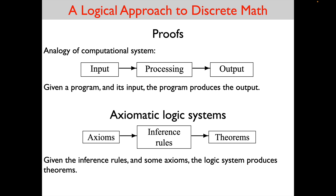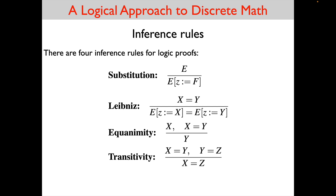Now let's review exactly how the inference rules are used in this calculation logic system. This material is from the first lecture. We have an analogy: a computational system has a program that takes input and produces output; similarly, an axiomatic logic system has inference rules that, given axioms, produce theorems. There are four inference rules for logic proofs: substitution, Leibniz, equanimity, and transitivity. Let's see how we used all four in the proof we just did.